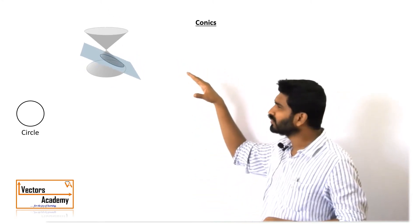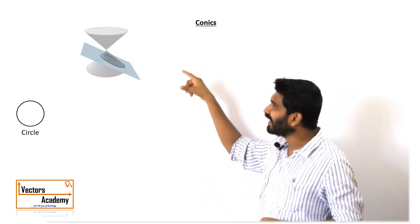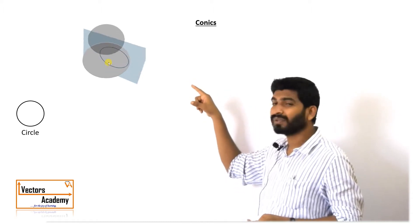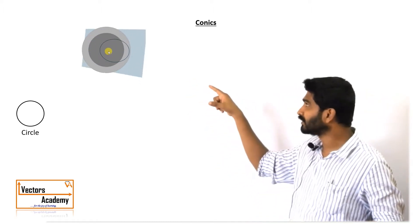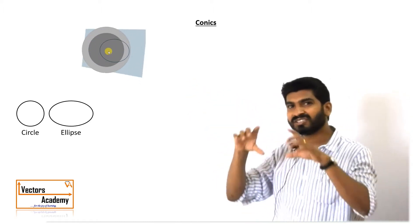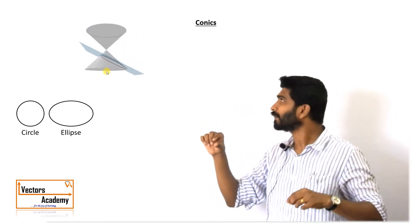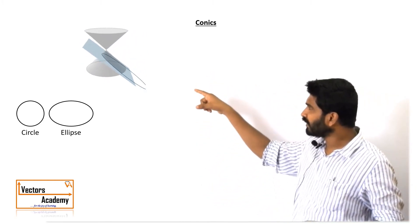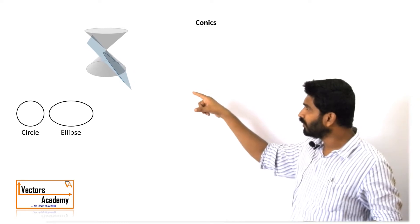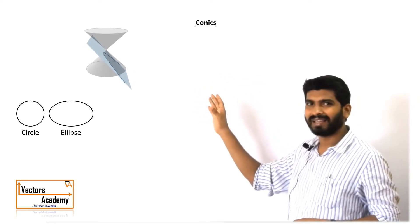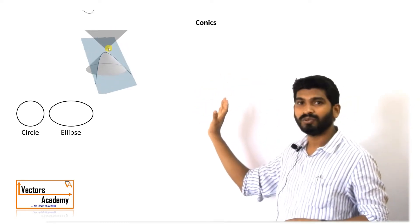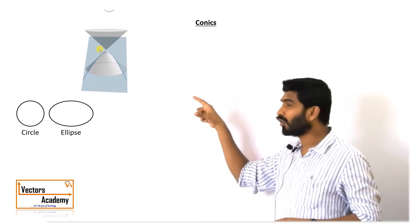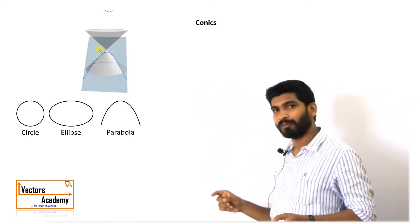If we tilt the plane to some angle to the axis of the cone, the shape we get is an ellipse — it is just an elongated circle, you can say. Now, if we cut the cone at some angle from beneath the cone, the shape we get is called a parabola.